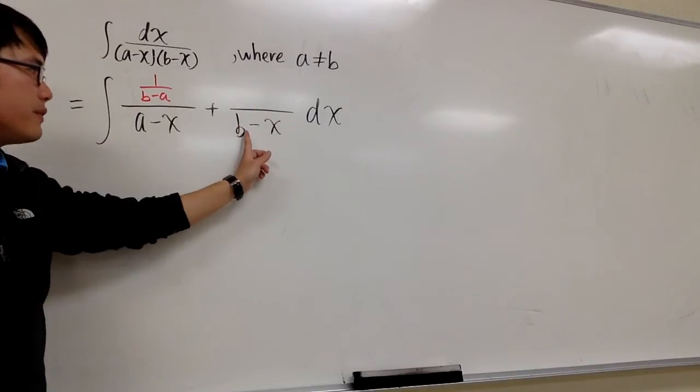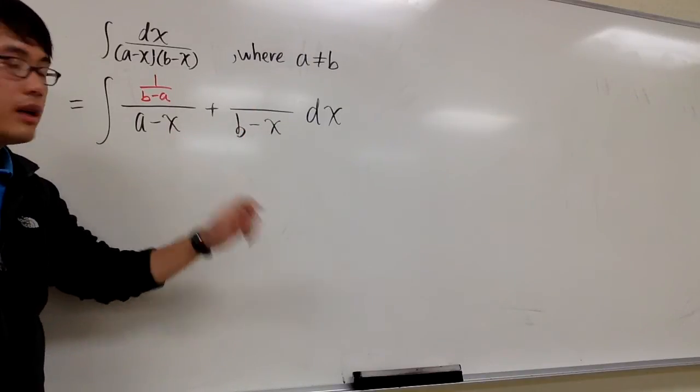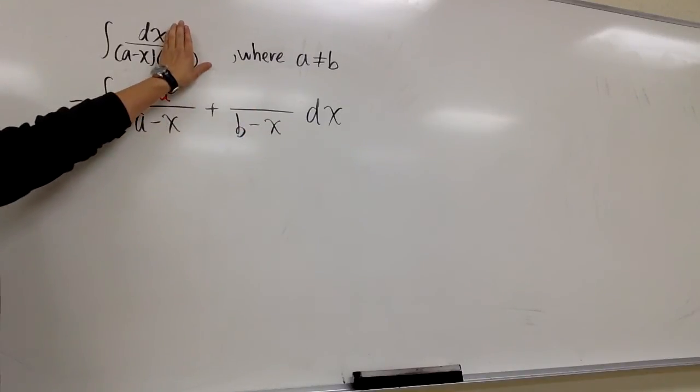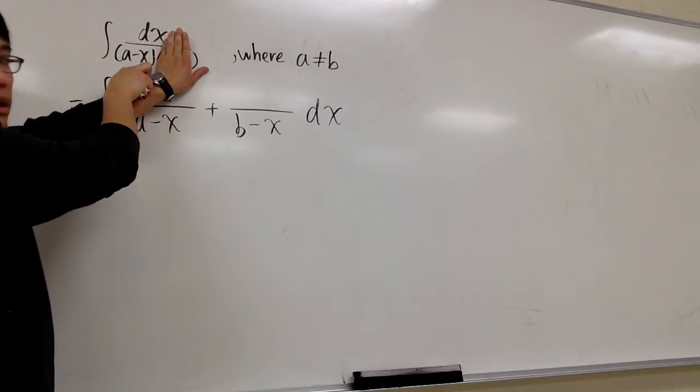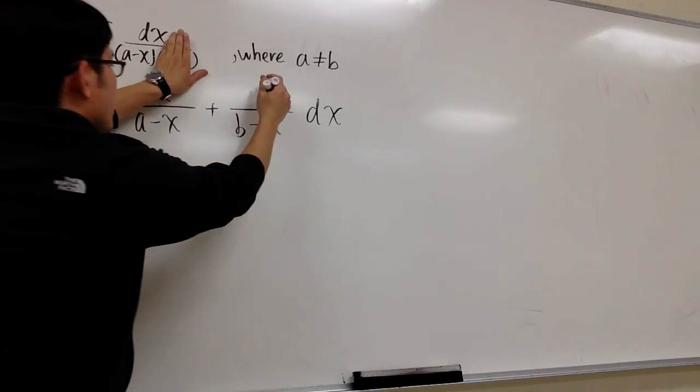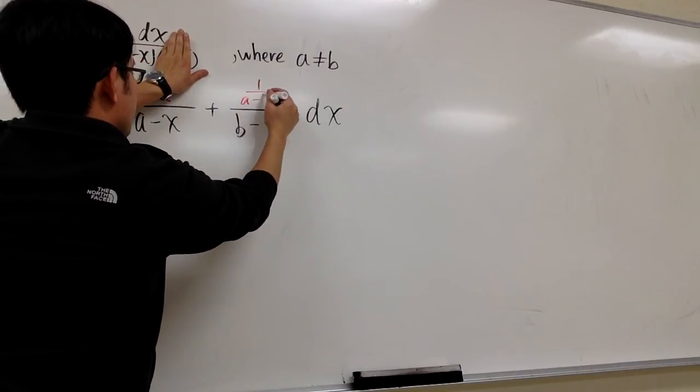Similarly, to figure out the number above the (b-x) factor, I go back to the original, I cover this up. And then I will choose x equals b. So we will have 1 over (a-b). 1 over (a-b).